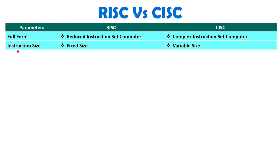Instruction size with RISC is fixed, while with CISC it varies with respect to the instruction. For complex instructions, the size will be more, and for simple instructions, the size will be less. So the size of instruction varies with respect to the operation in CISC, but it is almost fixed for all instructions with RISC.